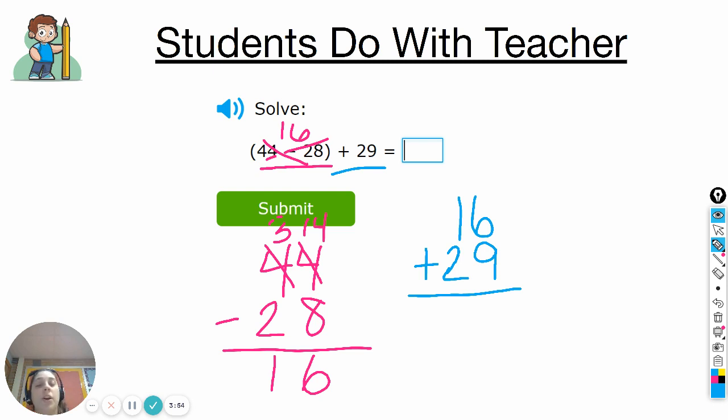Now, I'm going to start in the ones place. I'm going to add 6 plus 9. 6 plus 9 gives me 15, but I can't write 15 in my answer because that's two digits, and I only have enough space to write a digit in the ones place. So, I'm going to write 15 as 1, 5, with my 1 in the tens place on the line because I still need to use it, and my 5 in the ones place as part of my answer.